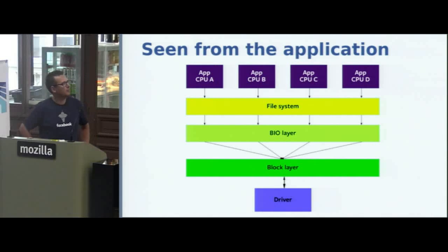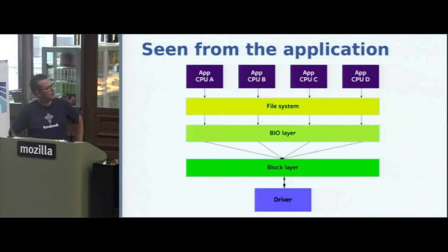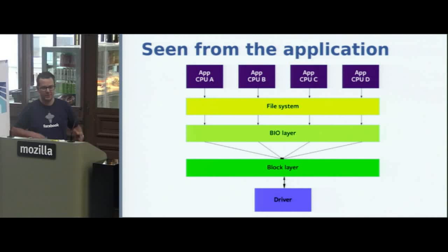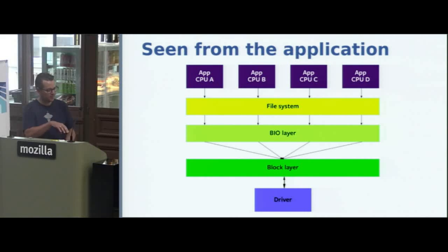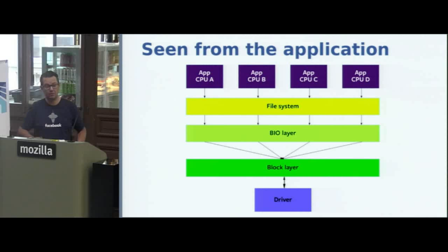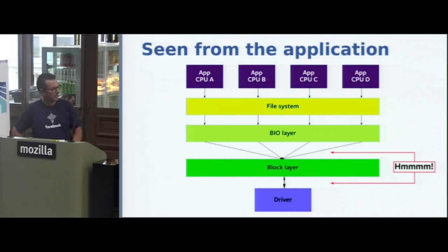From the application's point of view, going through the file system is mostly a parallel thing — if you're accessing different files, applications generally don't interact. Going through the BIO layer and setting up the BIO is a parallel operation with no shared state. But once you get to the block layer and have to insert a request into the queues, all applications end up having to grab the same resources, lock the device, and insert requests into the same shared structures. They're all going through the same very tight funnel, and that gives us a good idea of where the bottlenecks are.